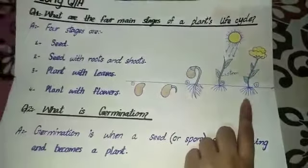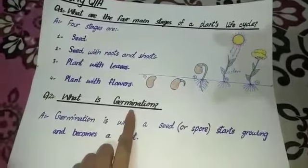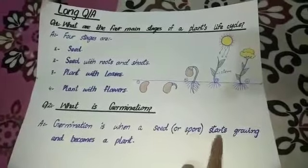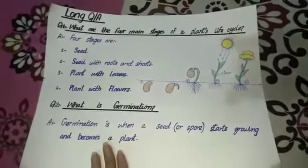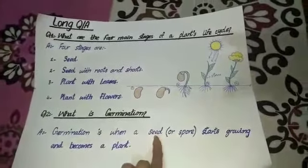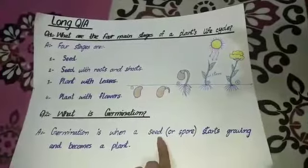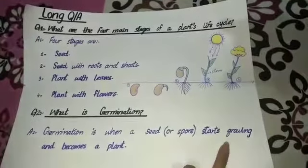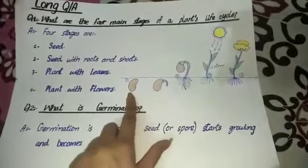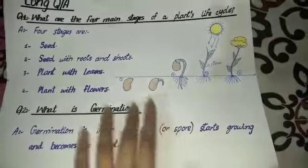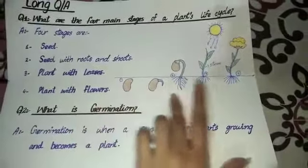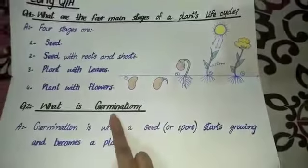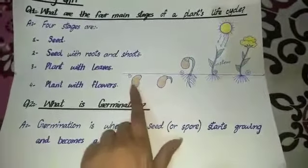Now moving on to the next question: what is germination? Germination is when a seed or spore starts growing and becomes a plant۔ Seed flowering plants کے لیے اور spore non-flowering plants کے لیے ہوتا ہے۔ جب ہم seed یا spore کو moist soil میں plant کر دیتے ہیں، plant کرنے سے لے کر پورا plant بننے تک جو بھی پورا process ہوگا وہ germination کہلاتا ہے۔